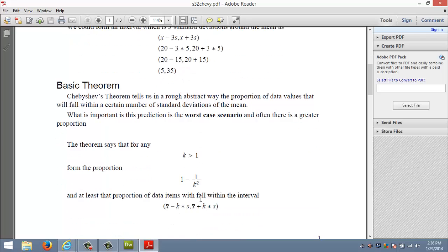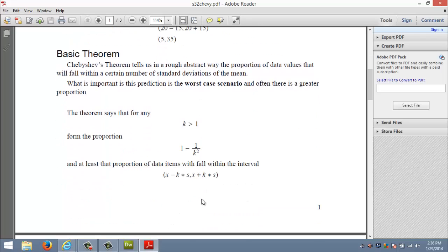What Chebyshev's theorem says is if you go k standard deviations around the mean, where k is just some number, could be a fraction, could be a whole number, the only restriction is k has got to be bigger than 1, then the theory predicts the proportion of your data that have to live in that interval. That proportion is 1 minus 1 over your k number squared.